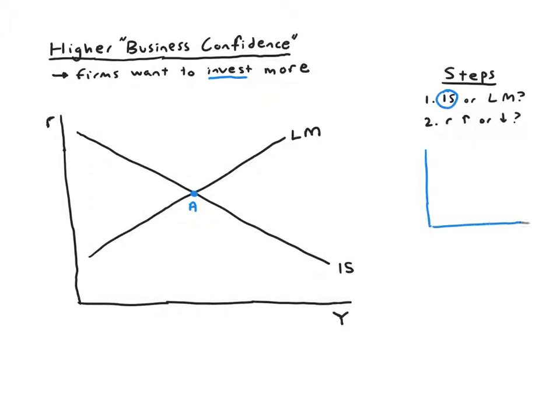That's our initial scenario in the loanable funds market. Then we're told businesses want to invest more, so that must mean shifting I upward. We have more investment demand, and that gets us to this new point that I'll label two. At that new point, we can answer step two. This is definitely higher interest rates. It's pushing interest rates up. That means I need to push my IS curve up, physically push it upward to give us higher interest rates for any given level of income.